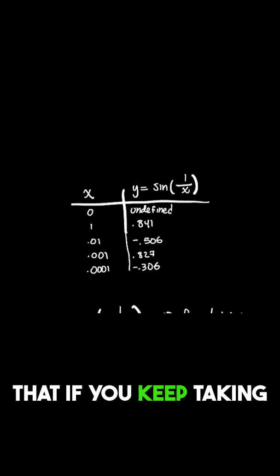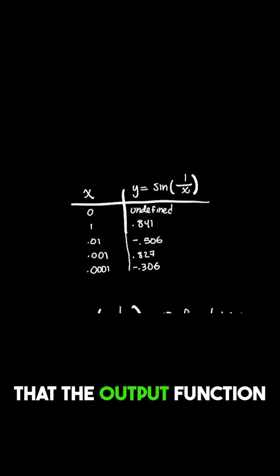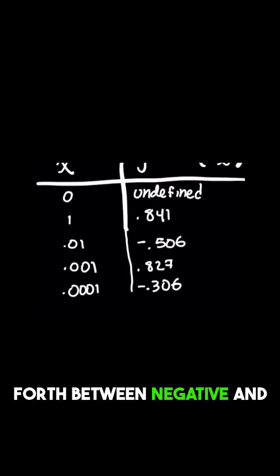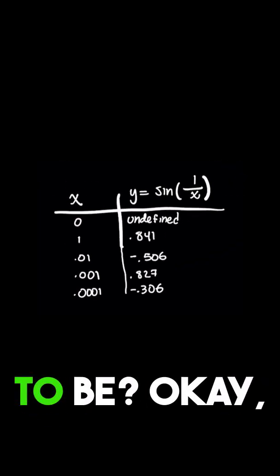But look at this graph here, because you'll notice that if you keep taking terms out, you're going to see more and more that the output function y is going to very rapidly keep flipping back and forth between negative and positive values.